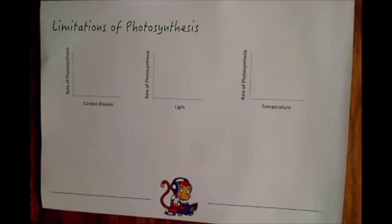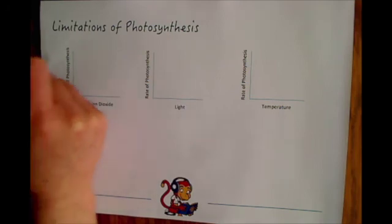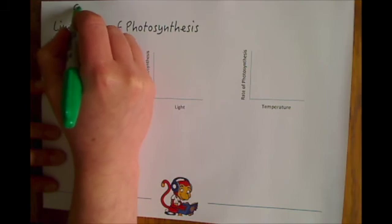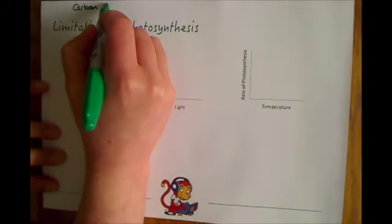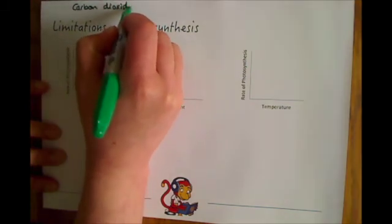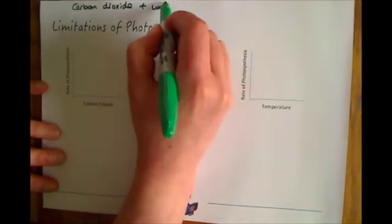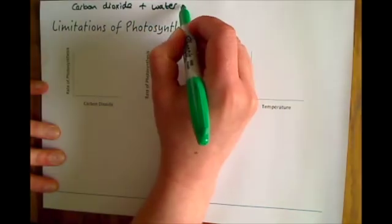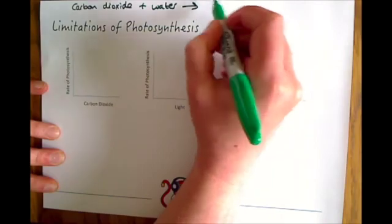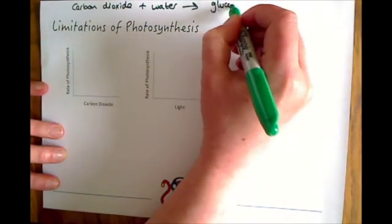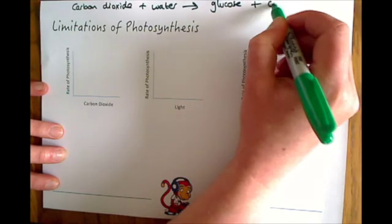Hello and welcome to this video on the limitations of photosynthesis. Let's start off by just reminding ourselves of the equation. Hopefully you'll be able to think about what it is in your head right now. It would be carbon dioxide added to water to make glucose plus oxygen.